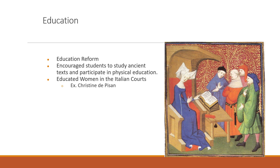What else is happening during the Renaissance? Education reform—students were encouraged to study ancient texts, and liberal arts education flourished. Students were also encouraged to participate in physical education. We can also see educated women in Italian and sometimes French courts. One example is Christine de Pizan, a poet who lived from 1364 to 1430, originally from Venice. She later became a court writer for the French king Charles VI and is known as an early feminist who promoted education for women.